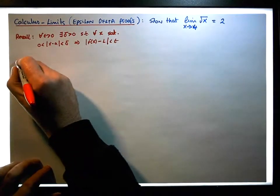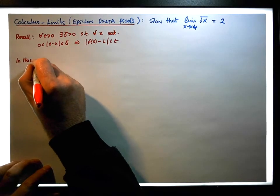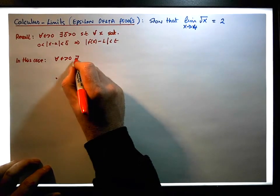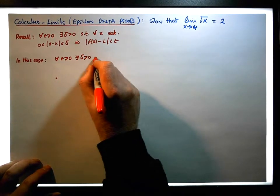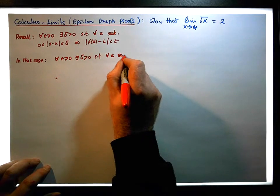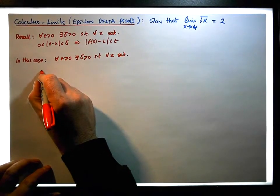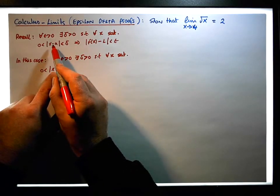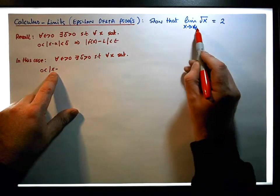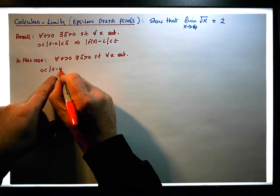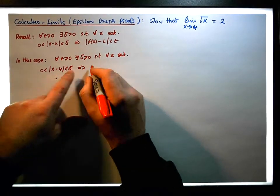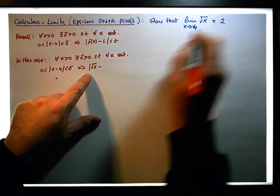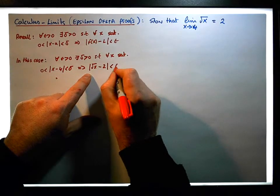In this case, we need to show that for each and every epsilon greater than 0, there exists a delta greater than 0, such that for each and every x satisfying the condition that 0 is less than the absolute value of x minus 4, which is less than delta, needs to imply that the absolute value of f of x — the square root of x — minus the limit, which is 2, needs to be less than epsilon.